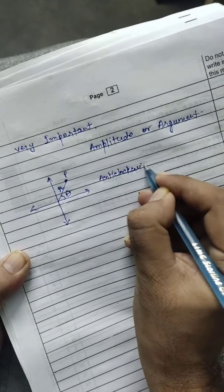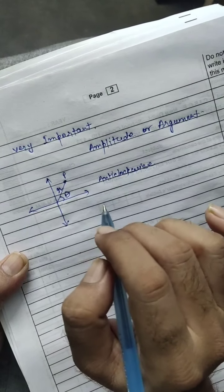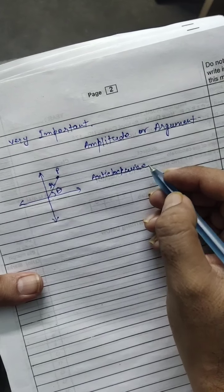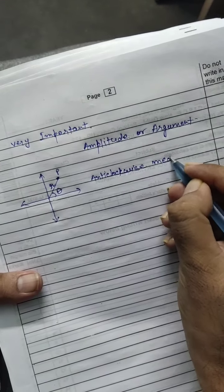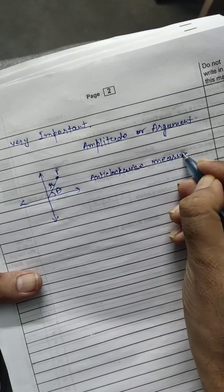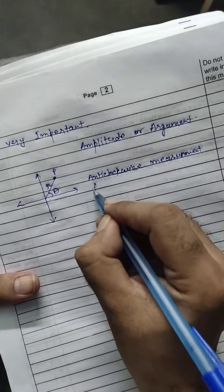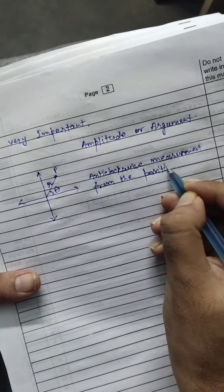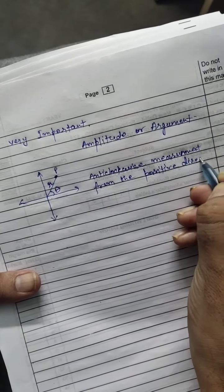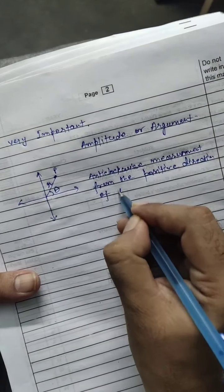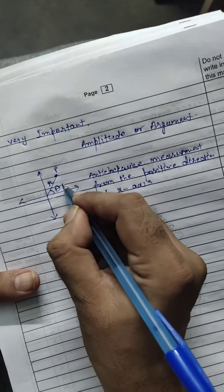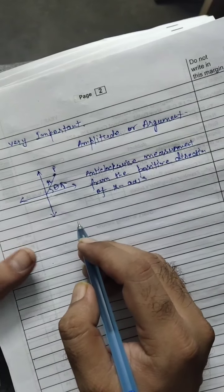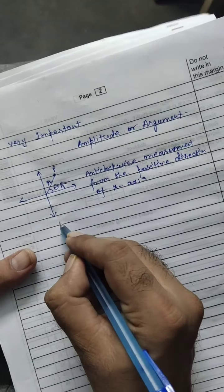I'm talking about only amplitude. What is amplitude basically — in my previous lecture you have seen, but I am repeating again. Amplitude is the anti-clockwise measurement from the positive direction of the x-axis. Anti-clockwise direction means in this direction. So students, I'm going to give you some conditions.